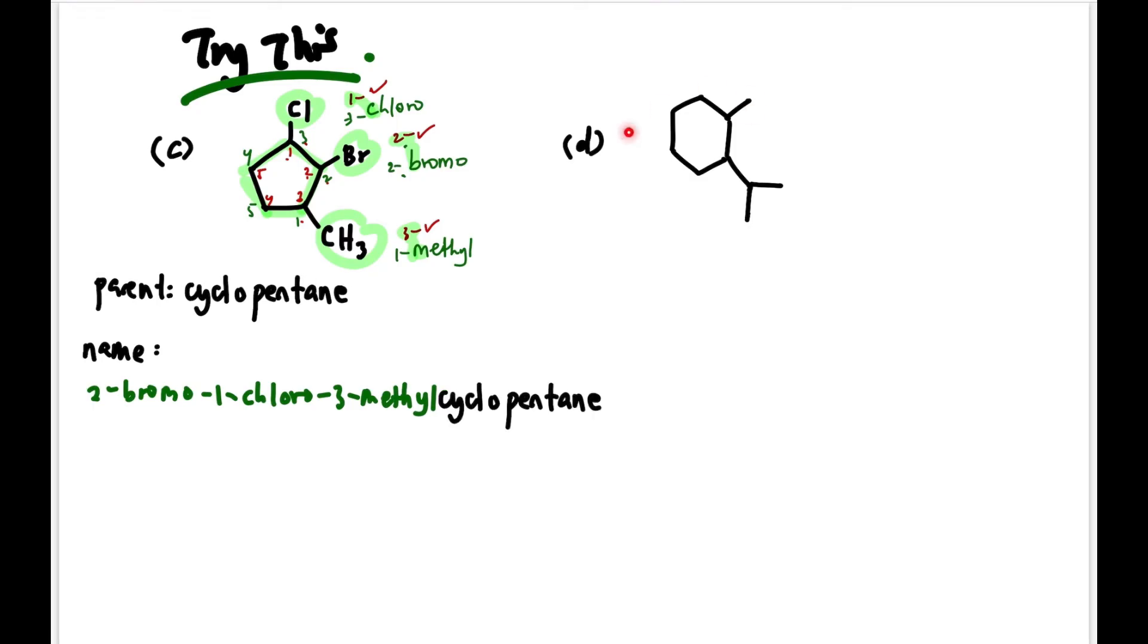Next, question D has two substituents and the parent is six carbons, so cyclohexane. The substituents are methyl on top and isopropyl at the bottom with two branches. Remember, iso counts for alphabetical ordering, but tri and di don't. Iso and neo count. So the numbering is 1, 2. Which do we write first? When there are two, arrange alphabetically. Iso comes first. So it's 1-isopropyl-2-methylcyclohexane.